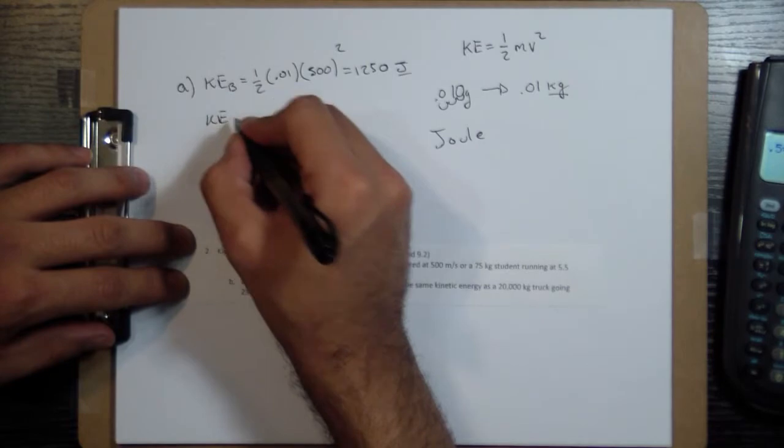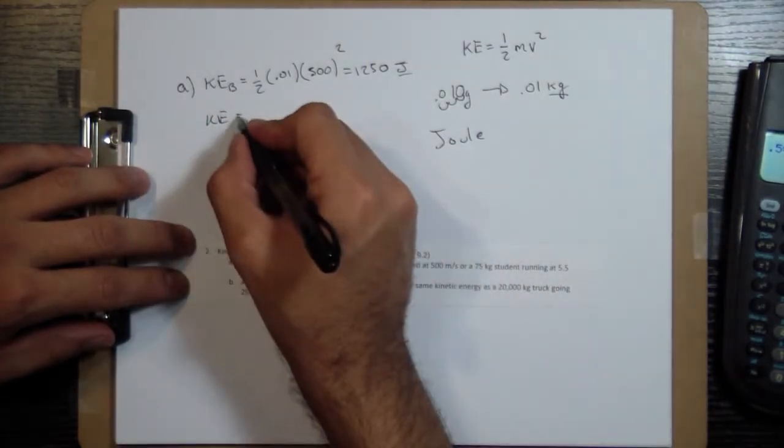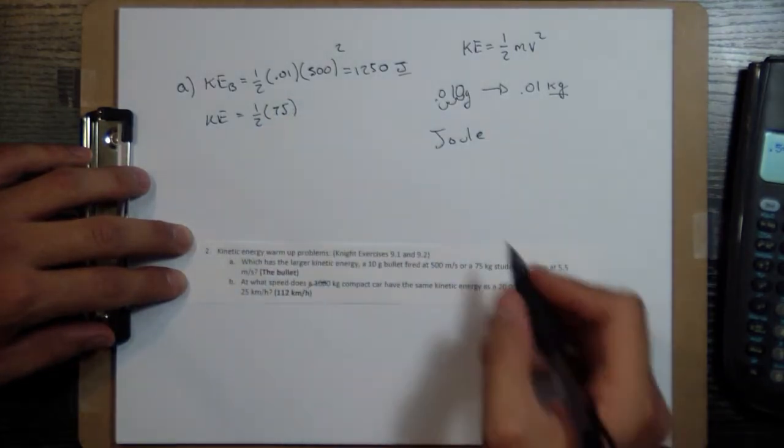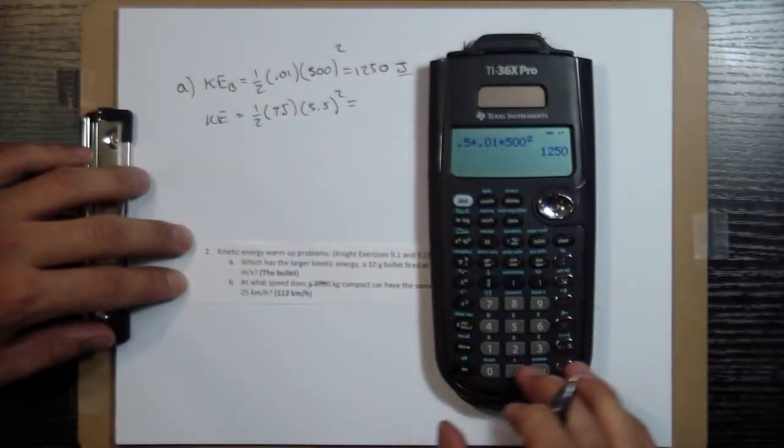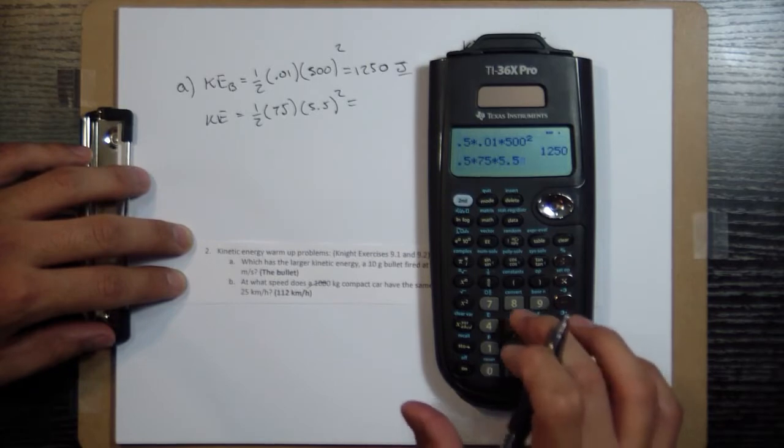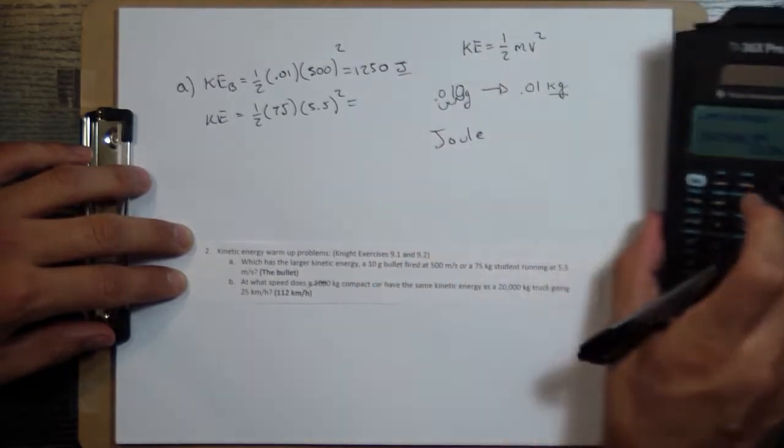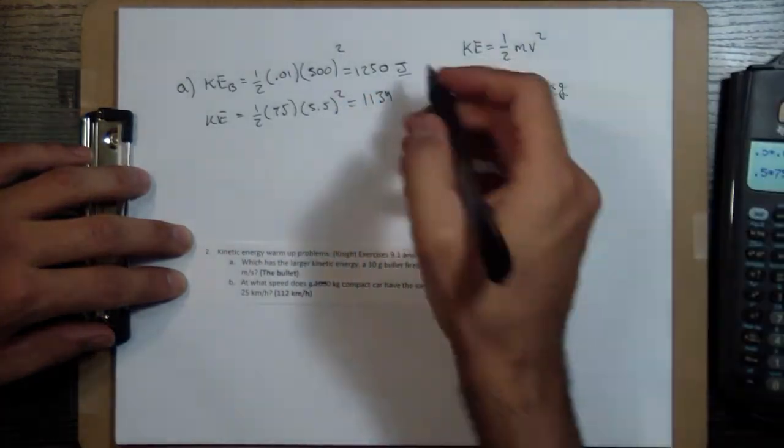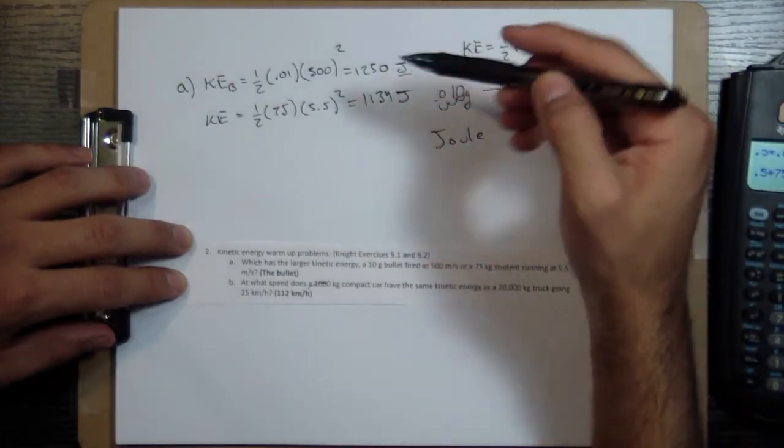And then for the kinetic energy for the student, we're going to do the same thing, but use the mass of the student, 75, it's already in kilograms, and then multiply by 5.5 squared. So if we do that, 0.5 times 75 times 5.5 squared, 1,134.3. So they're actually pretty close, but the bullet has more energy.